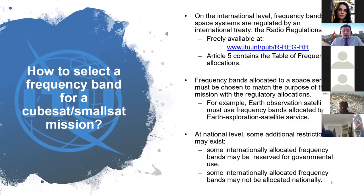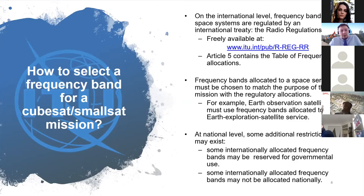The frequency bands allocated to a space service must be chosen to match the purpose of the mission with the regulatory allocations. For example, Earth observation satellites cannot use bands allocated to telecommunication services. Also, at the national level there may be additional restrictions: some internationally allocated bands may be reserved for governmental use, or some may simply not be allocated nationally, since countries have the right to use less than what the international table allows. You need to check this with your national regulator.